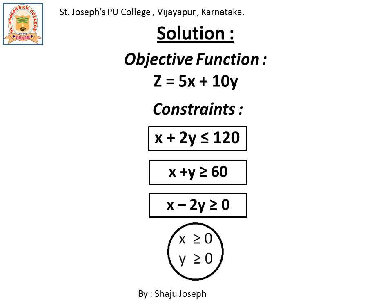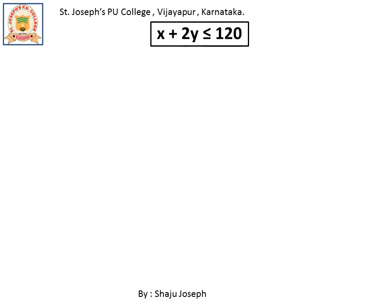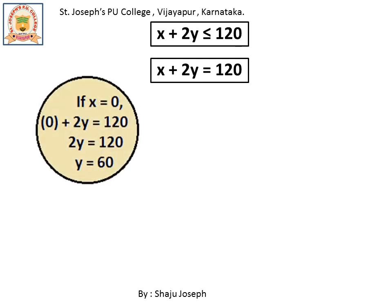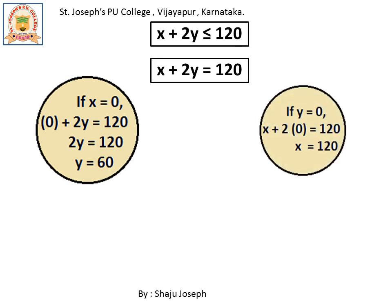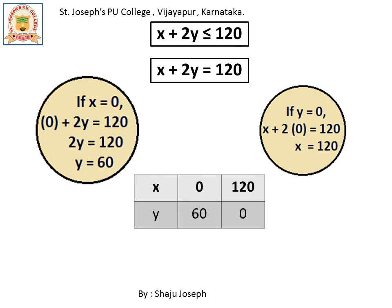Let us start solving the question by taking one constraint at a time. The first constraint is x plus 2y less than or equal to 120. Since we are using the graphical method, we will convert this inequality into an equation to find a line which will help us define the feasible region. So we convert it into x plus 2y equal to 120. By substituting x and y alternatively with 0, we get the intercepts: substituting x equal to 0 gives y-intercept 60, and substituting y equal to 0 gives x-intercept 120. These two points are (0, 60) and (120, 0).